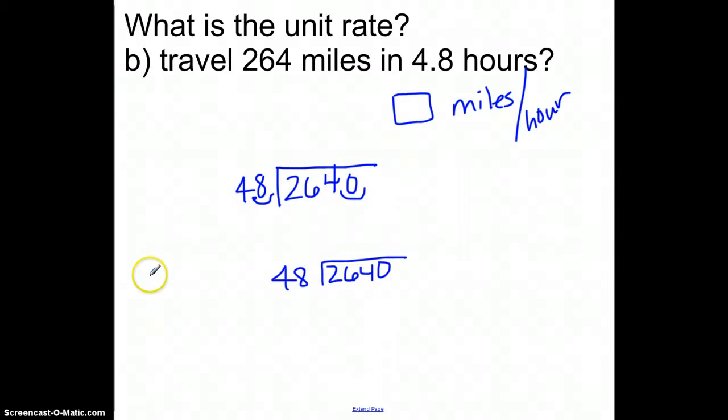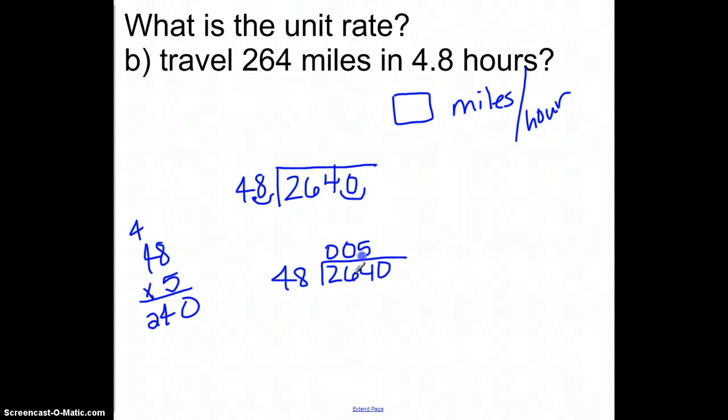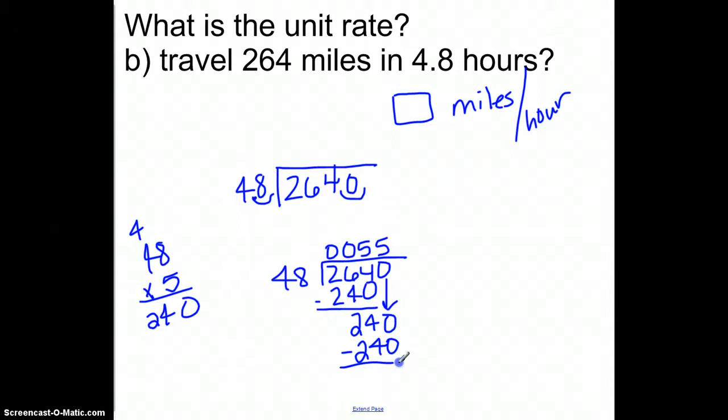48 doesn't go into 2, doesn't go into 26, but probably goes into 264 five times. 5 times 48 is 240 — that's as close as I can get without going over. Subtract, I have 24 left over, bring down the 0, and 240 is exactly five times 48. So that means 55 miles per hour — after 4.8 hours you will have driven 264 miles.